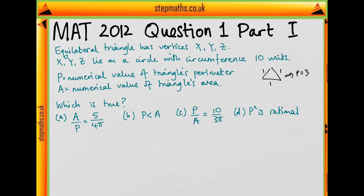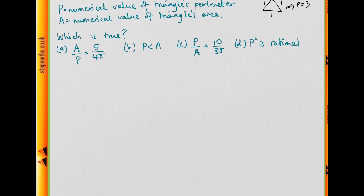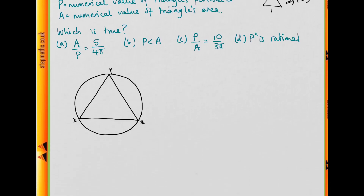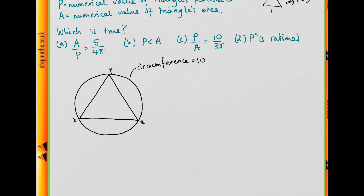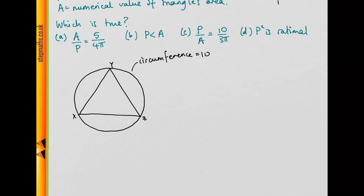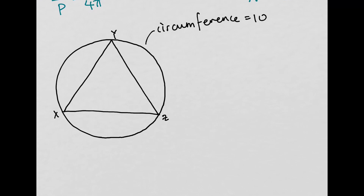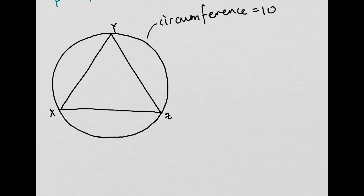A question like this is a good idea to start off with a picture to see what is going on. So what we have is something like this — an equilateral triangle inside a circle. And we want to know about the perimeter and the area of this triangle.